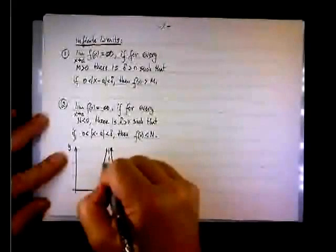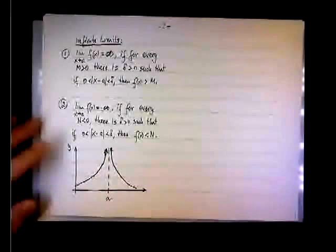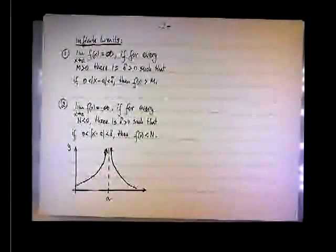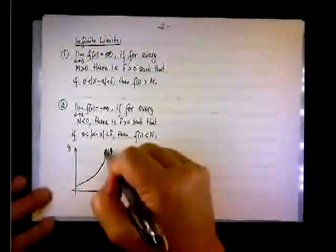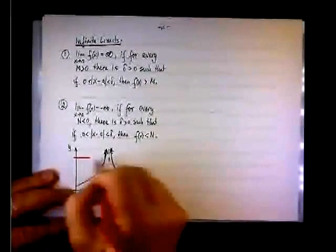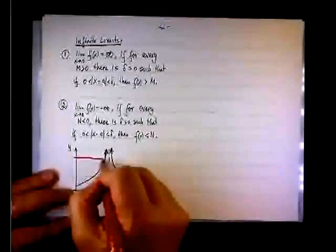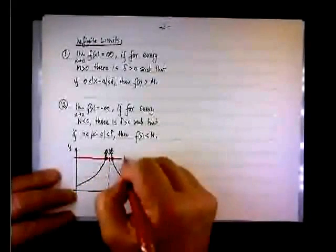So typically this function is probably going to be 1 over x minus a squared. And a can be a number, let's say 4 or 5. If you do 1 over the quantity x minus 5 squared, it's going to look like that. And now how we set it up, we're going to say that we want the function to be greater than m, and we draw randomly. I'm picking up this value to be m. So this horizontal line is going to intersect the x-axis. So this is y equal m right there.